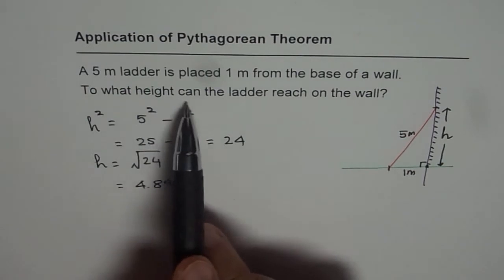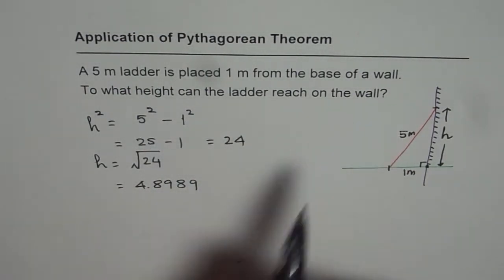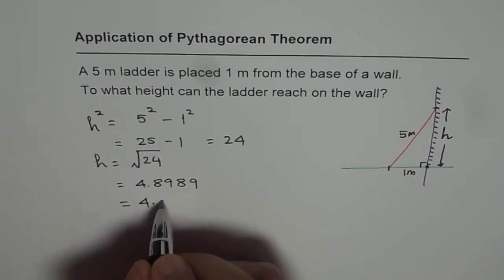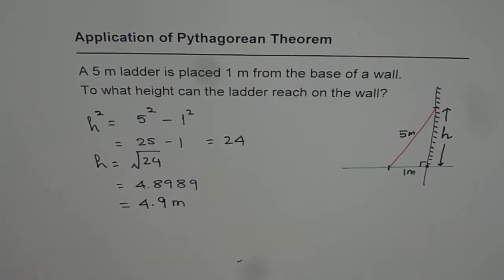So the question is, to what height can the ladder reach on the wall? So we can round this. If I round this, I get around 4.9 and the units is meters. So that is our answer.